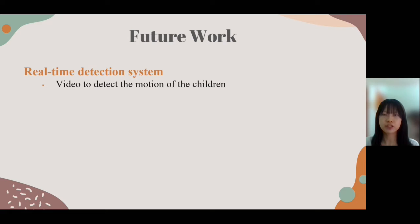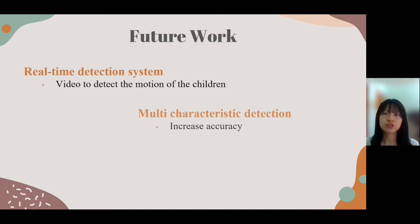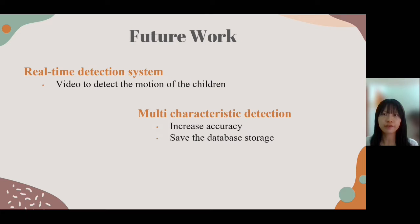In the future, a real-time detection system is an added value to implement. In our proposed system, captured images are used to detect children leaving the kindergarten, but this approach might not effectively detect the motion of children — using video is suggested for future systems. Furthermore, due to the current limitations of Amazon Rekognition, only face recognition is suitable for the proposed system. If the service capability is enhanced in the future, aspects such as the height of children are suggested to be analyzed so that accuracy could be higher, filtering out non-related objects and reducing irrelevant storage usage.